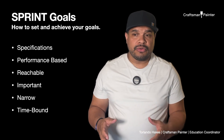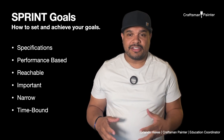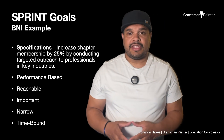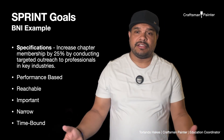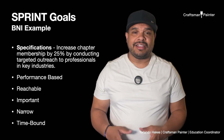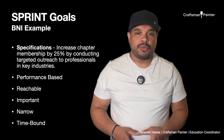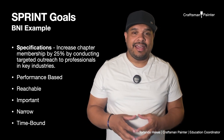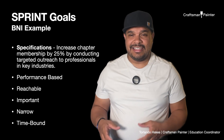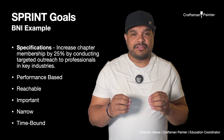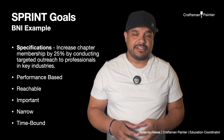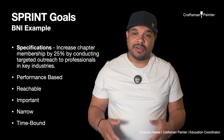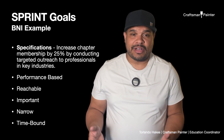Let's go through an example of what a SPRINT goal would look like, starting with the specifications. Let's say, because we're in a new chapter, we want to increase chapter membership by 25% by conducting targeted outreach to professionals in key industries. Here we've made clear specifications about what we want our goal to be and essentially what our strategy is going to be.